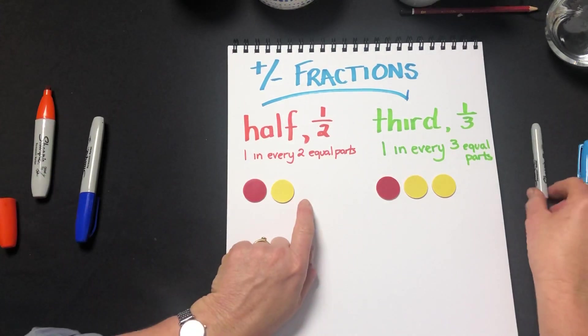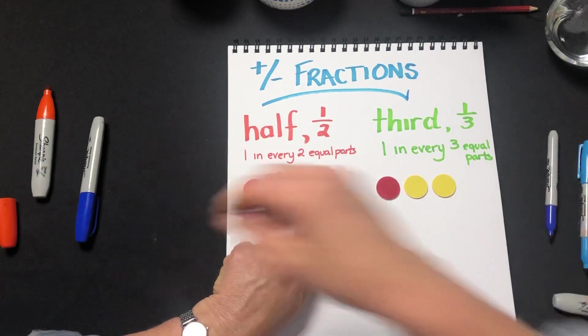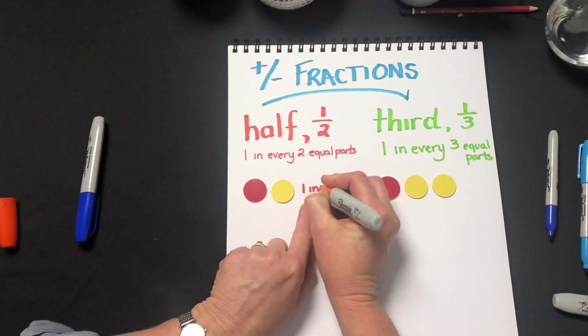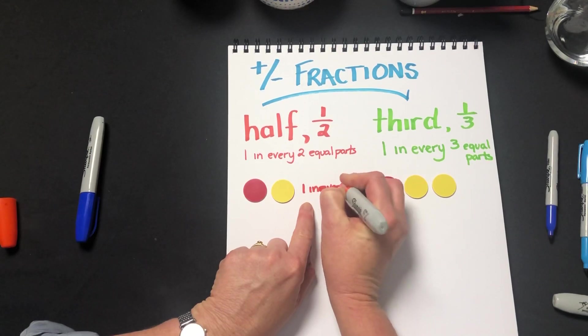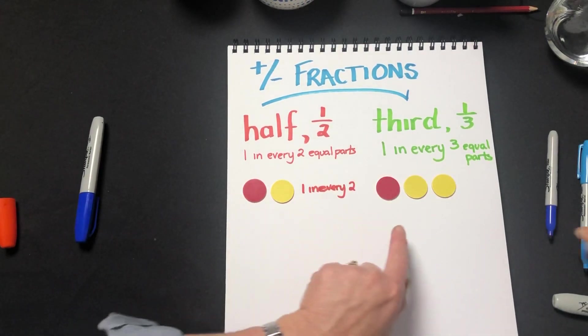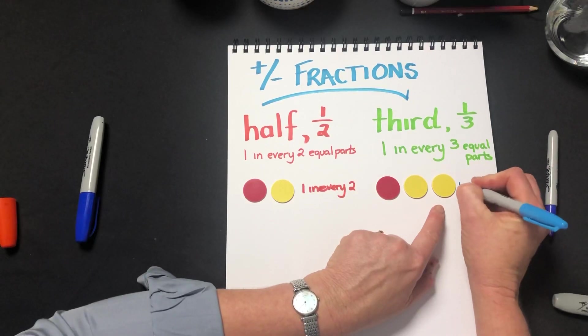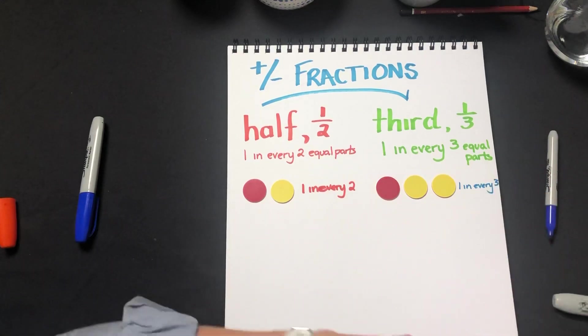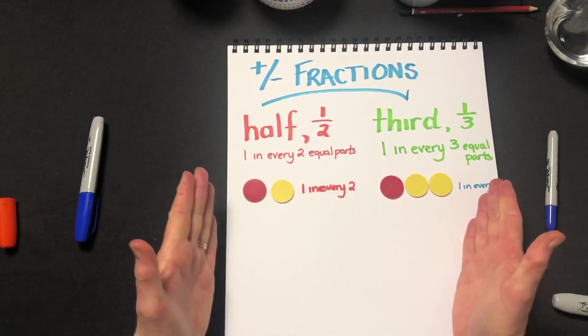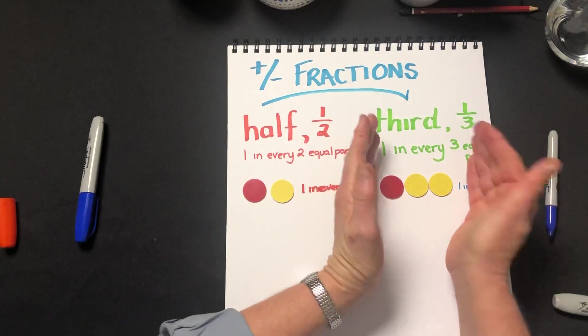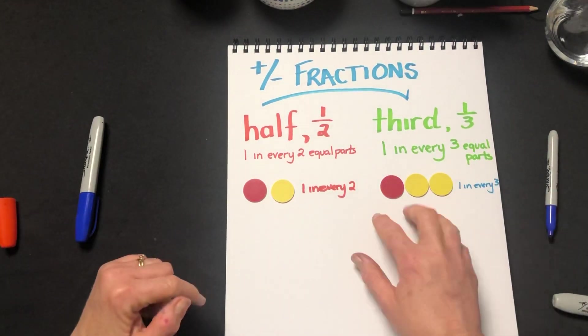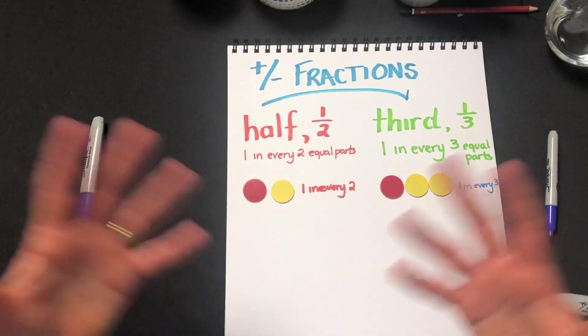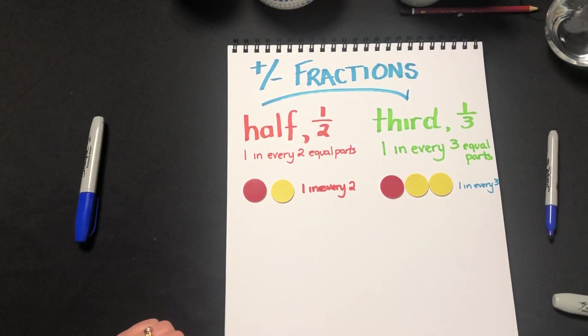So we can see here we've got a half and we would represent that as one in every two, and over here one in every three equal parts. What we've got here are different wholes. This whole has two counters, a collection of two, this whole has three, and because the wholes are different we can't do much with them as they are.